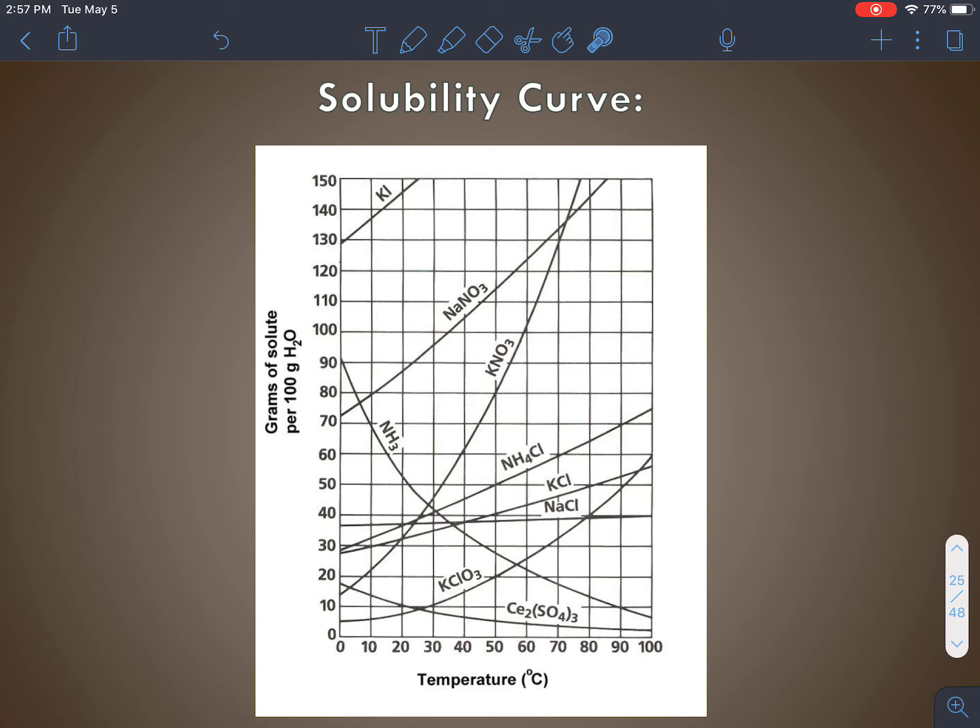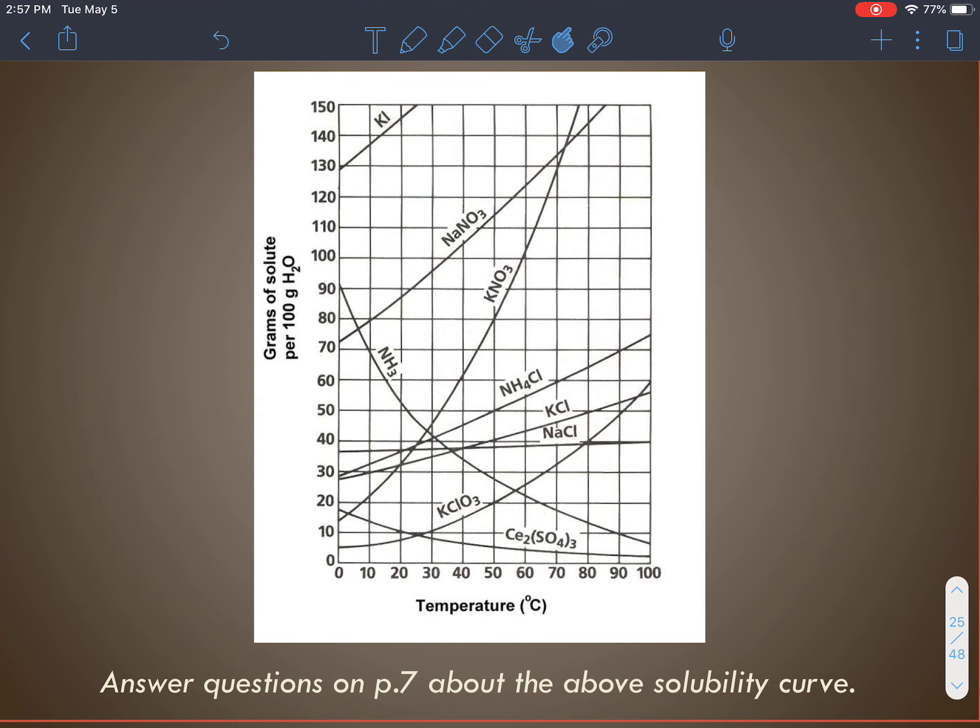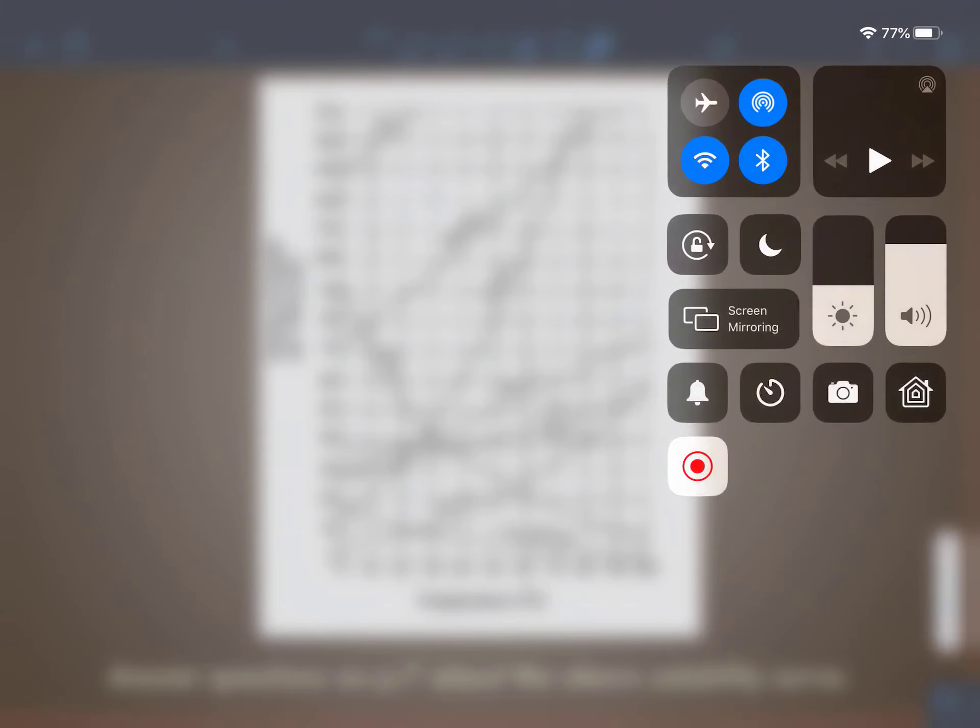So you can kind of see how this diagram goes. And now I think you've gotten enough explanation to be able to complete the questions on page seven. Let me know if you guys have any questions.